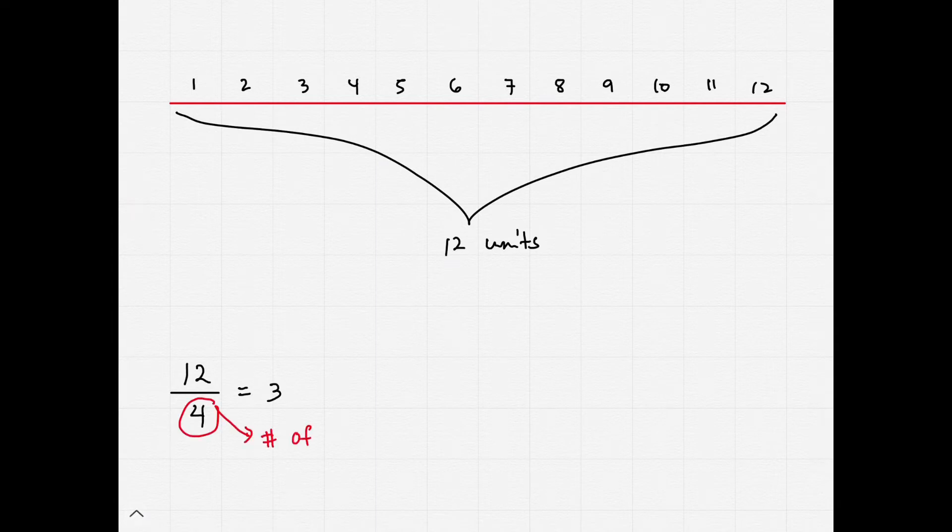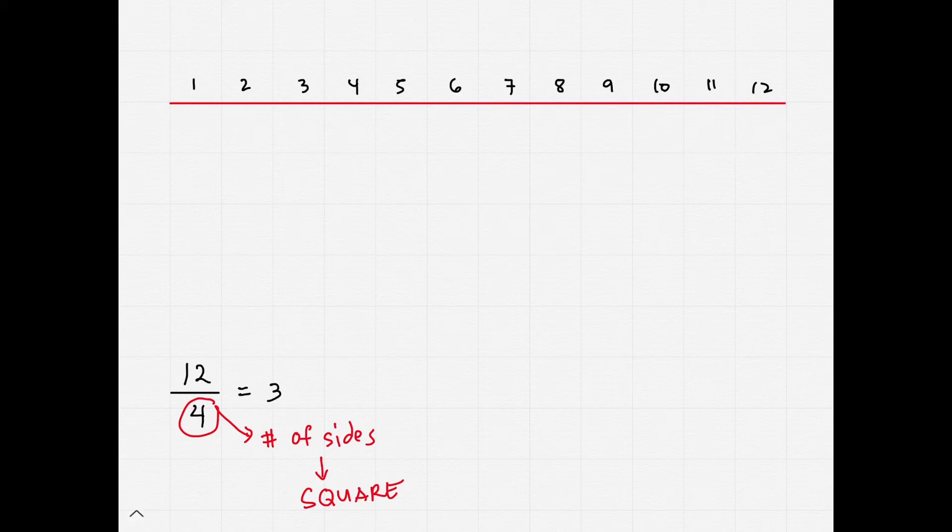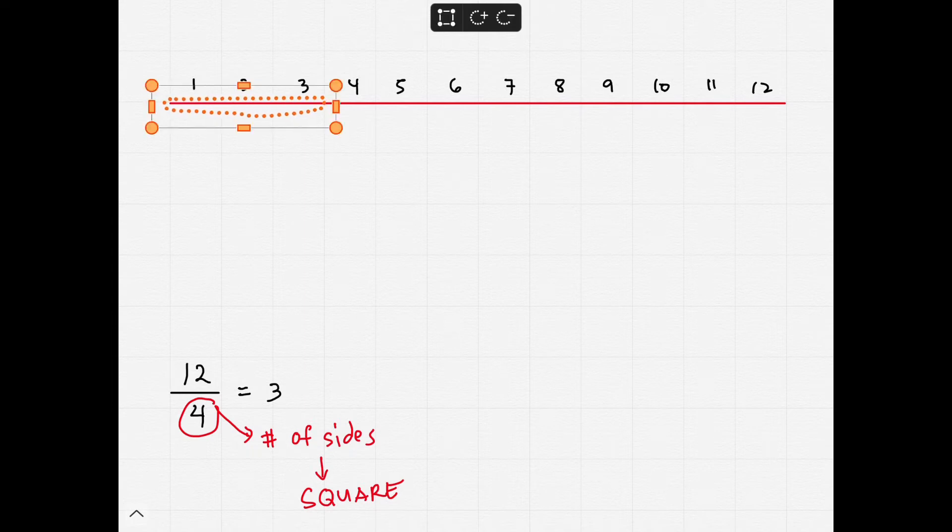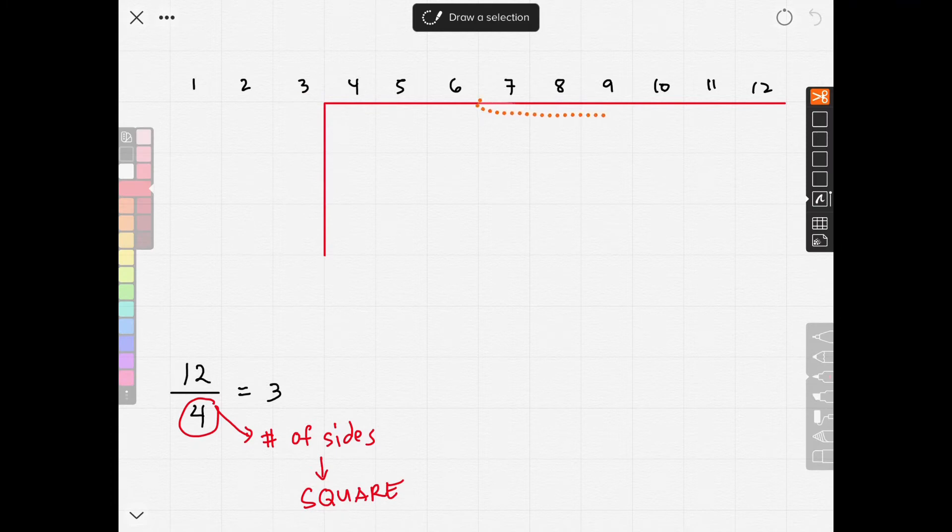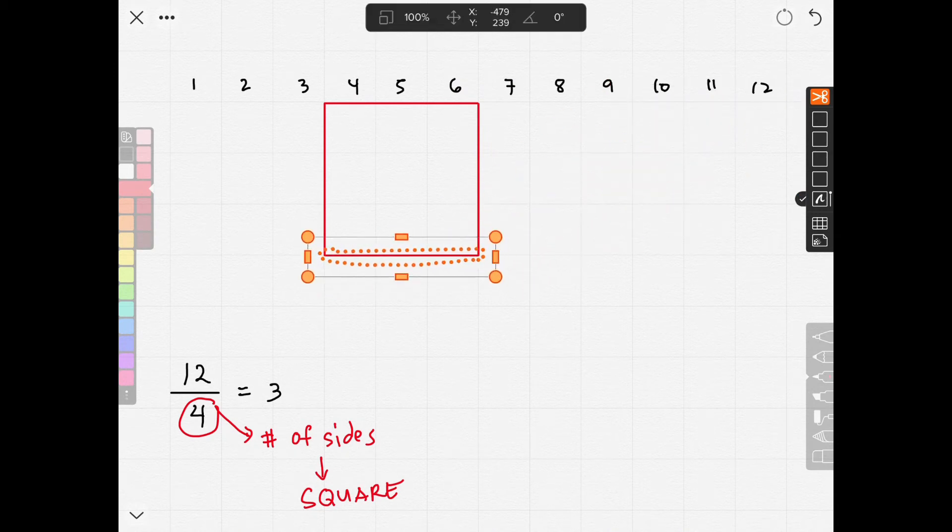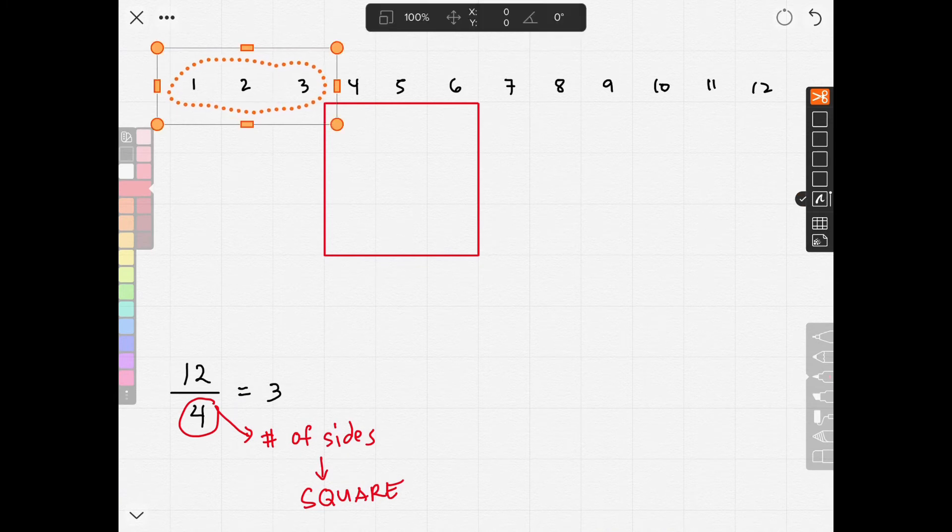Consequently, we now have 3 units as the length of each side. So here, each side of this square will have 3 units as its length.